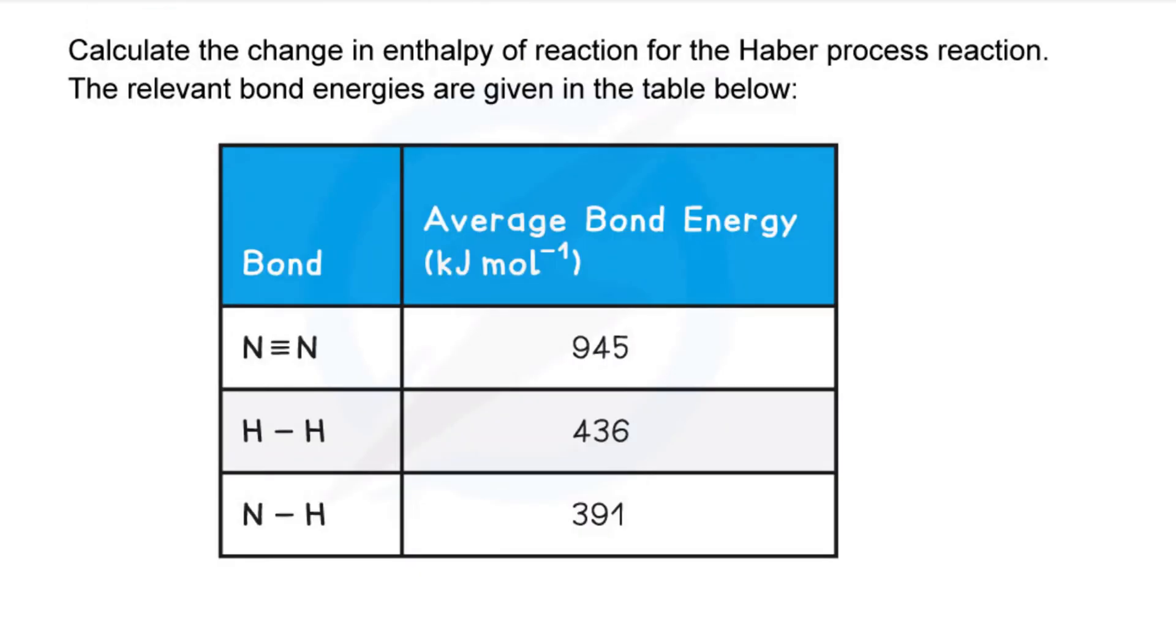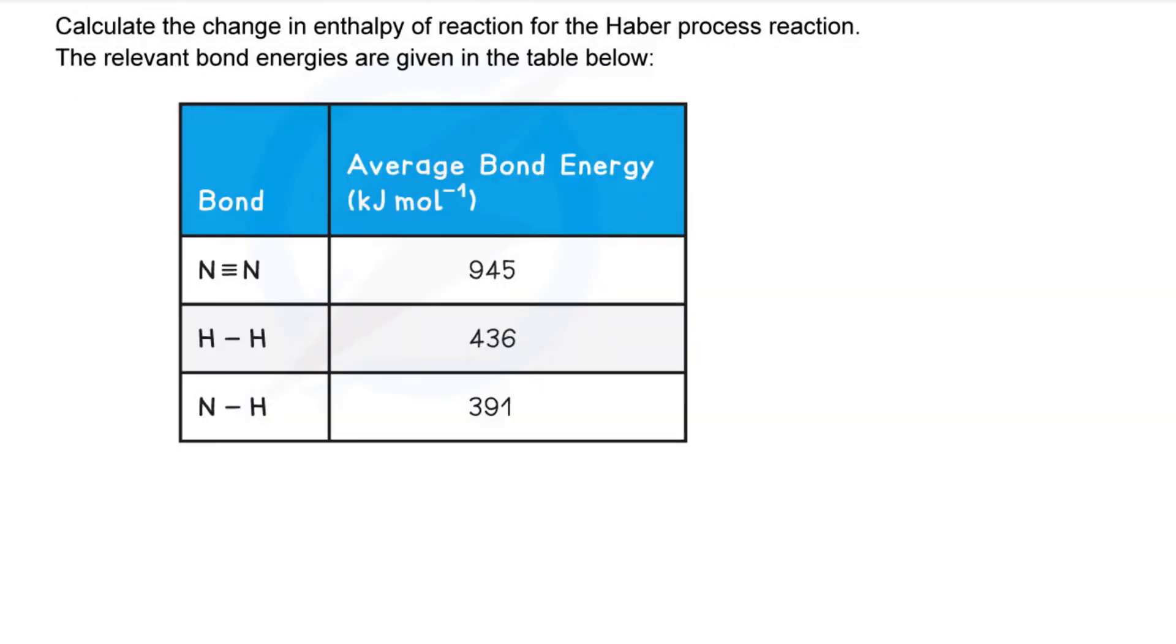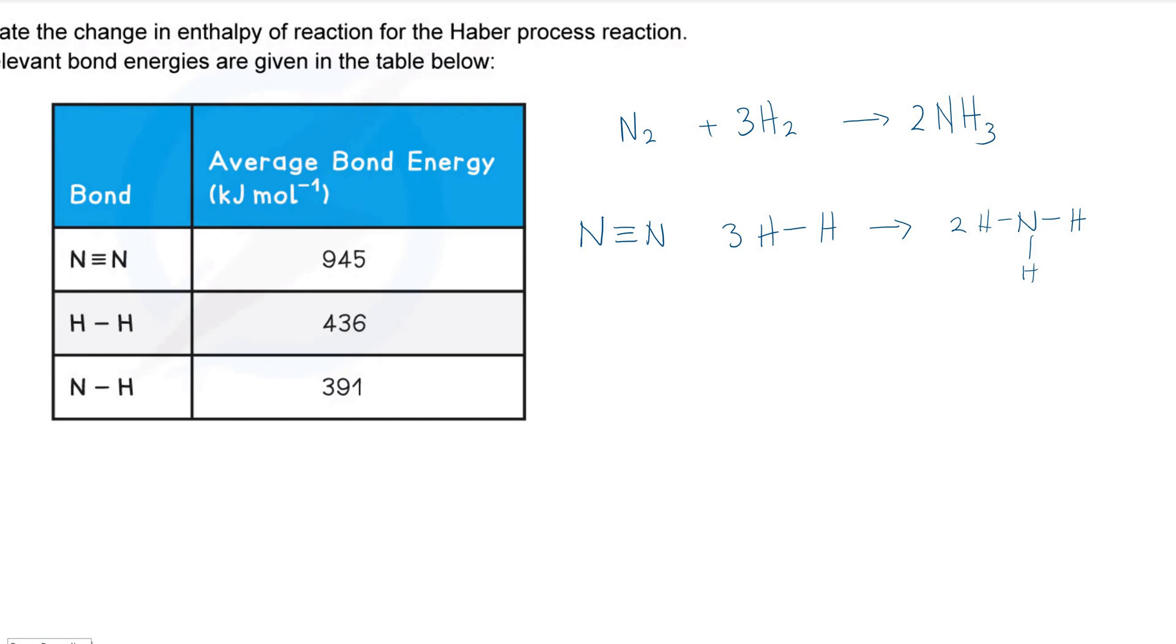Now with bond energies, we have to first write the balanced reaction equation showing the bonds of the substances. We need to remember that the bonds of the reagents need to be broken before new products can be formed. Bond breaking is endothermic.